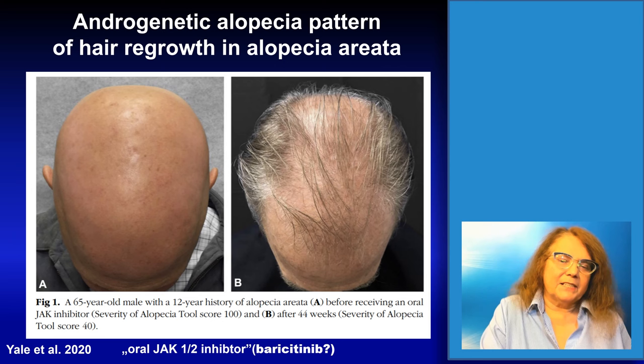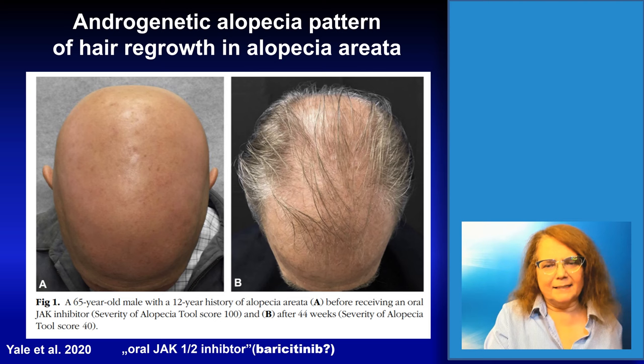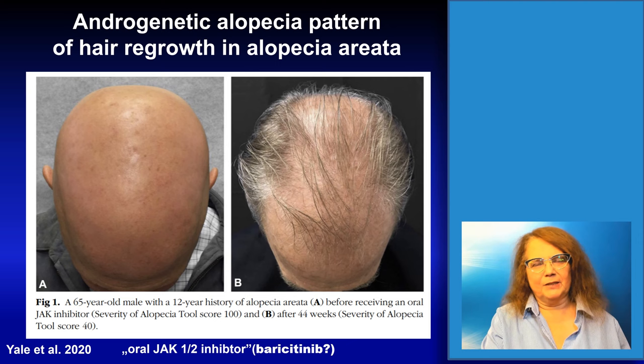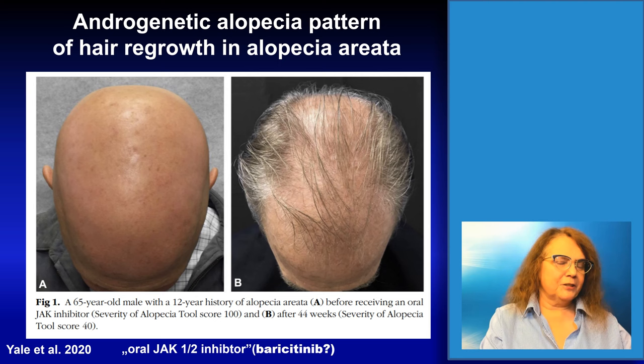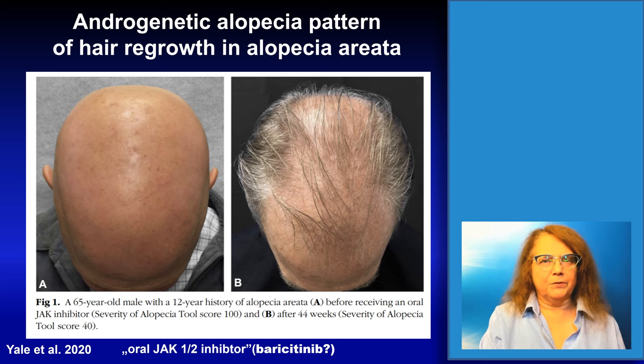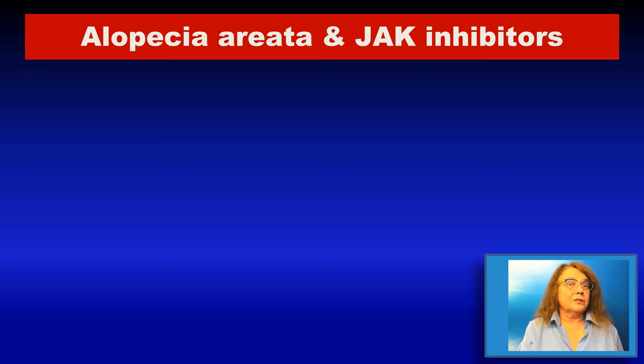This is an interesting case report of a patient treated with a JAK inhibitor for alopecia totalis. Because this was a long-lasting disease of 12 years, the patient had meanwhile developed androgenic alopecia. So the regrowth occurred in a pattern of androgenic alopecia. This highlights that alopecia totalis may coexist with other causes of hair loss, and treatment of alopecia areata does not always fully solve the patient's problem.